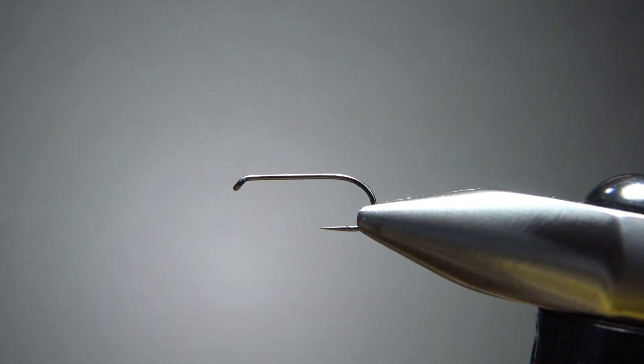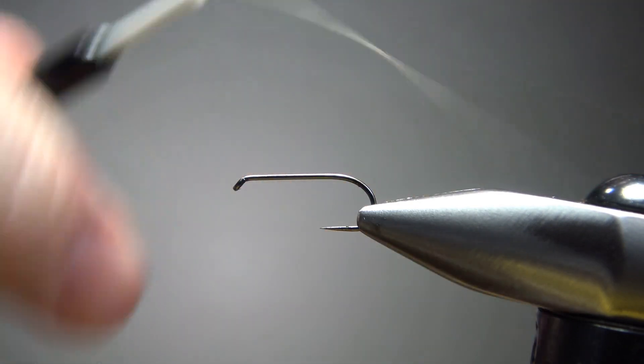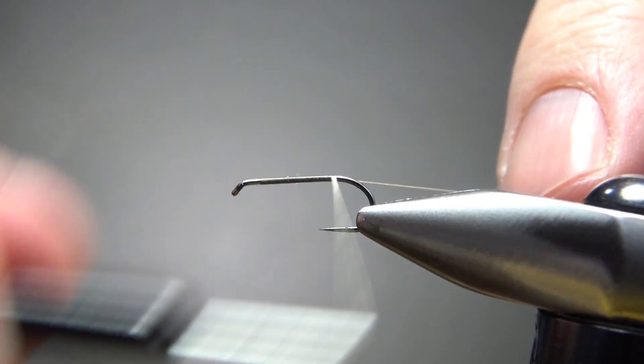Let's get that in there a little straighter. Okay. And I want to use some dun colored thread. This is actually a brown and gray but close enough.